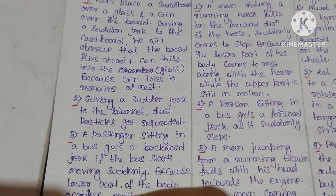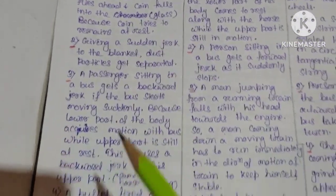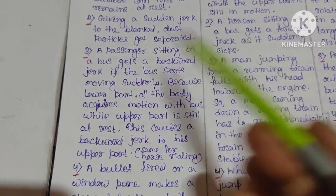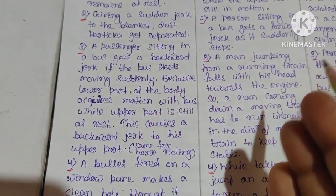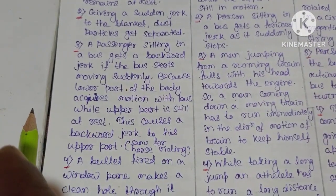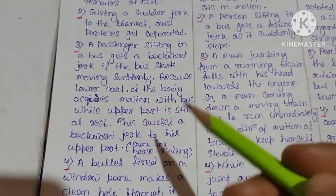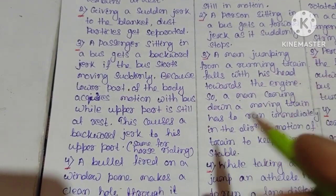When we pull the blanket, objects will separate from the blanket. This is the inertia of rest property. Again, a passenger sitting in a bus gets a backward jerk if the bus starts moving suddenly. When the bus starts moving, the passenger feels a backward jerk because the lower part of the body moves with the bus.